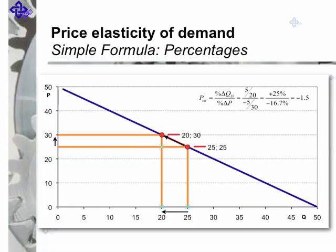The price elasticity is calculated as follows. The quantity demanded decreases by 5, that is 20% of 25. The price rose by 5, and that is 20% of 25 pounds too. The price elasticity now is minus 1.